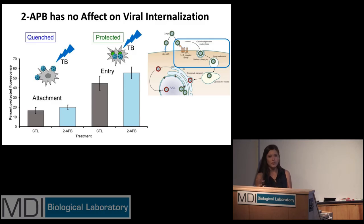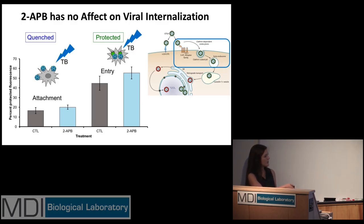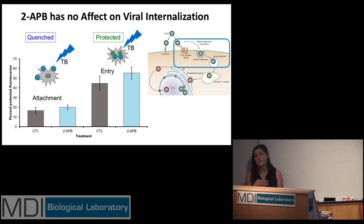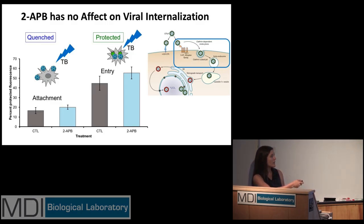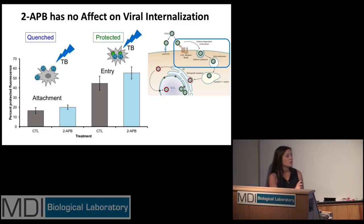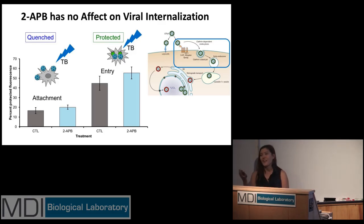Here are the results. The first two bars show control and 2-APB at four degrees — viral attachment — and we see very low percent protected fluorescence as expected, with very little difference between the two bars, further confirming that viral attachment is not being affected. The next two bars show control and 2-APB at 37 degrees incubation. We have a much higher protected fluorescence, and yet there is still no significant difference between 2-APB and control treated cells, suggesting that none of the steps for internalization are being affected either.